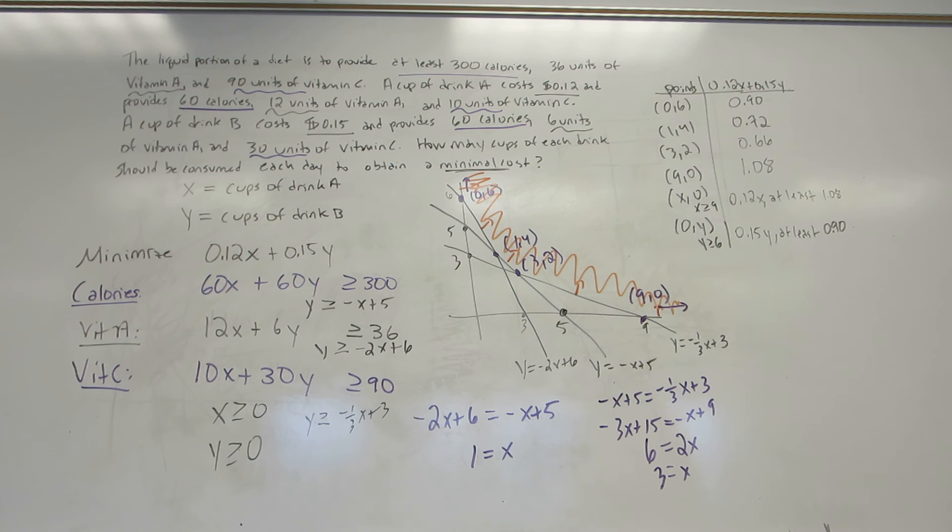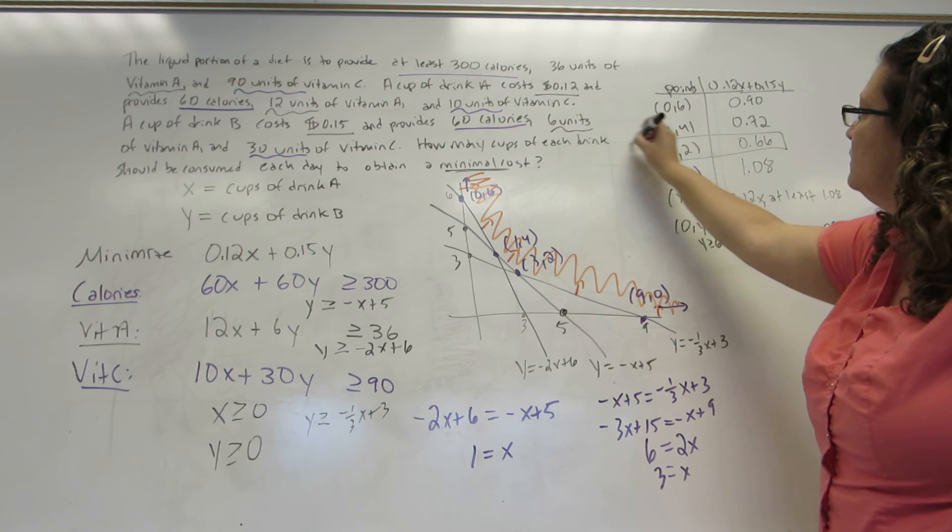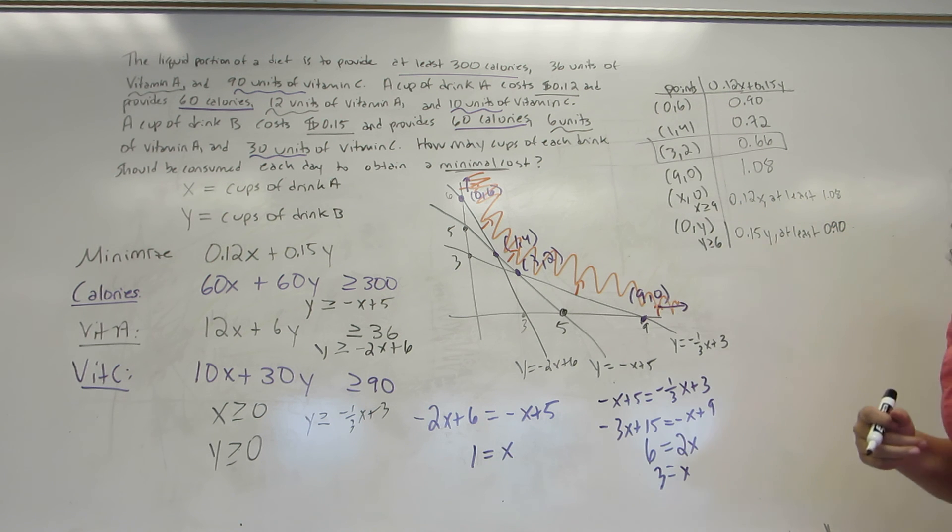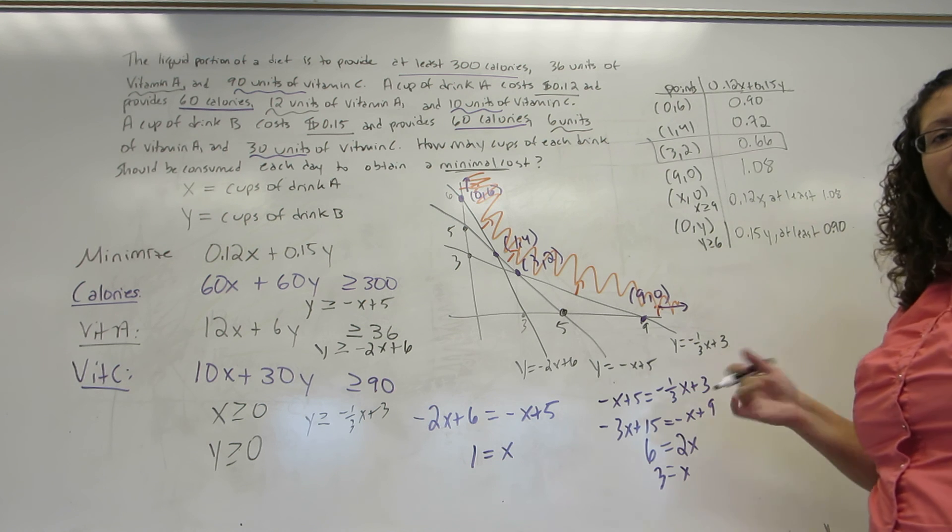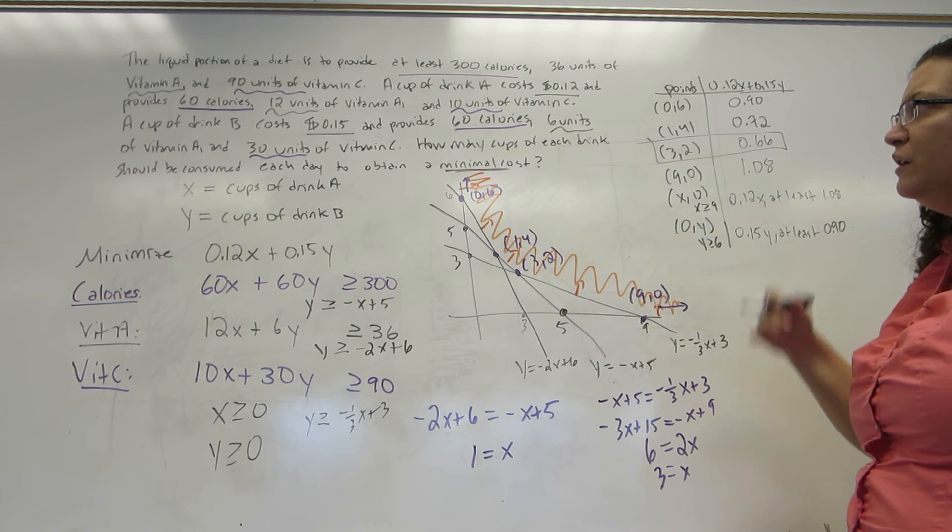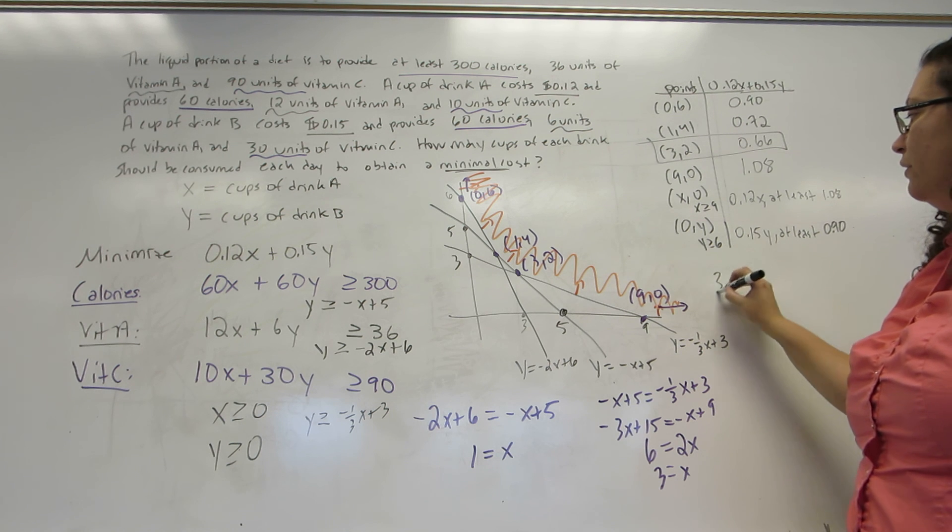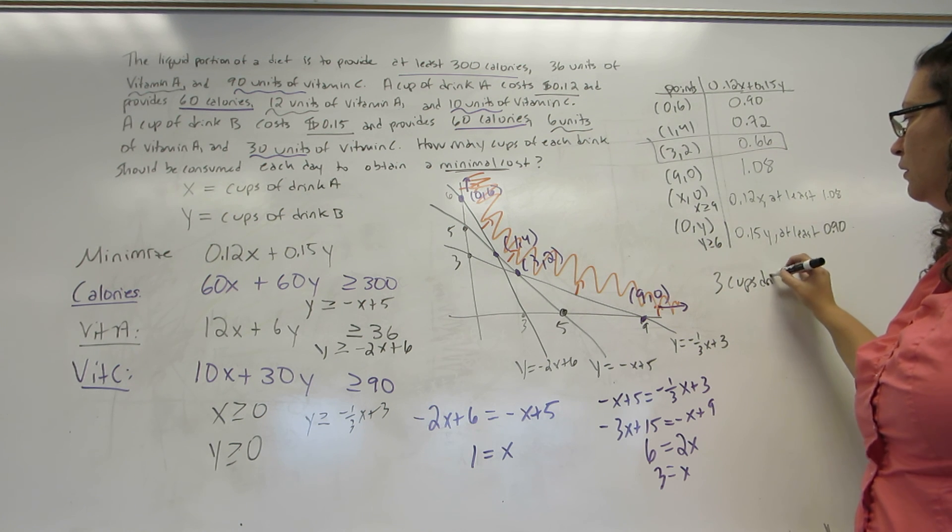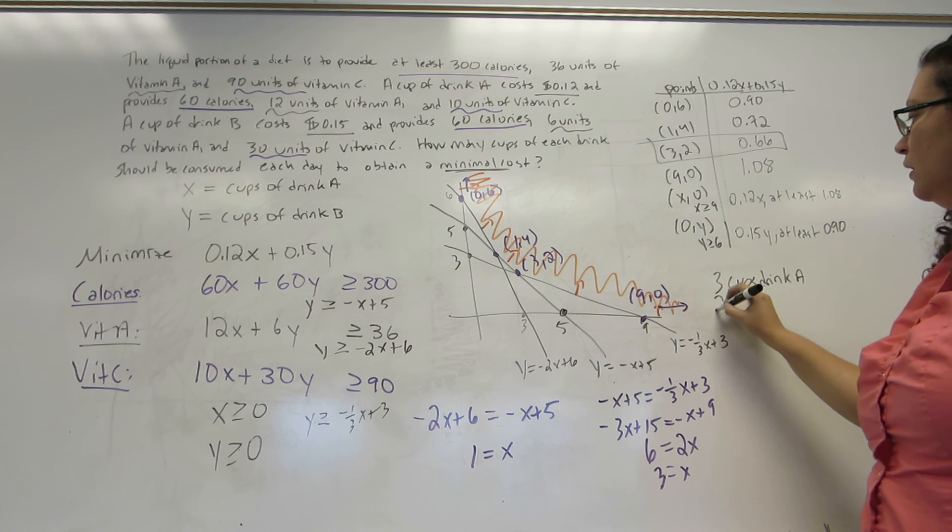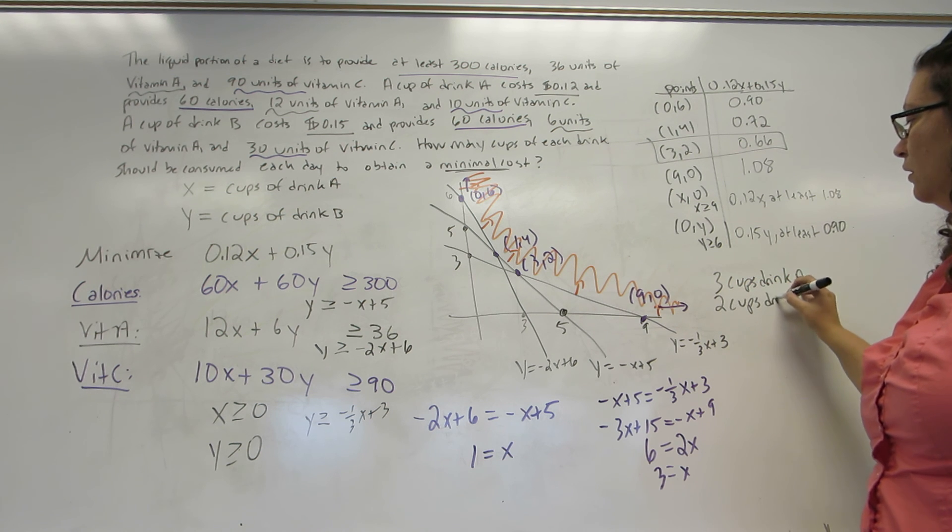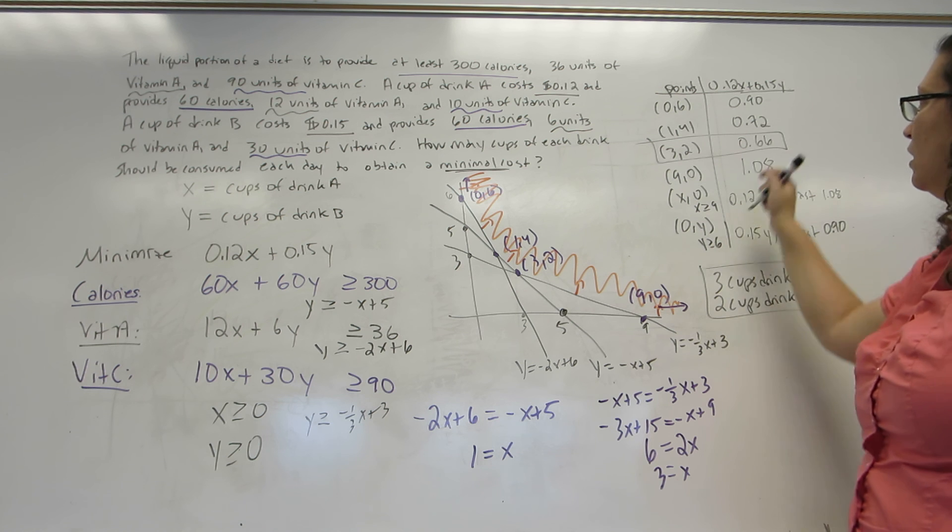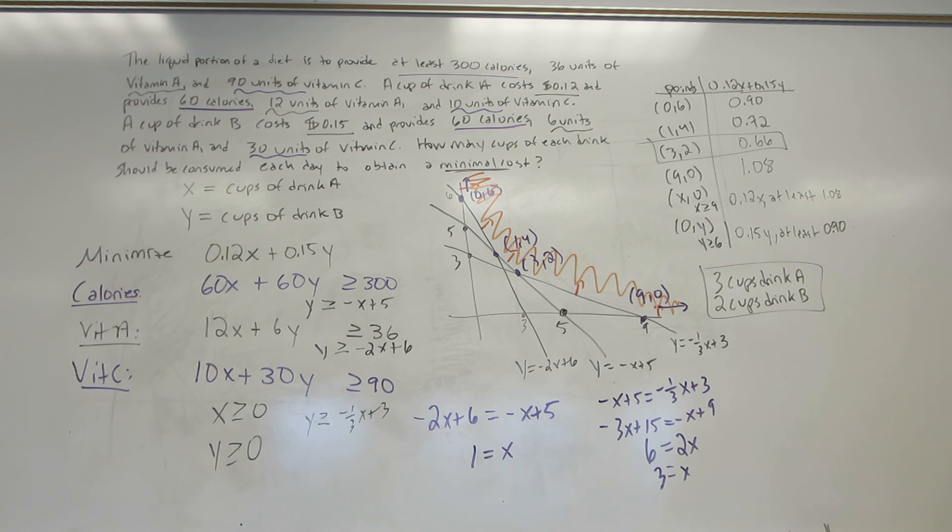Now we are trying for a minimum. So I go through and I say, do I have a defined minimum? The answer is yes. It's the 0.66. The only thing you have to be careful of, as with any word problem, is to actually answer the question that was given. And the question was, how many cups of each drink should be consumed? So the answer is 3 cups of drink A and 2 cups of drink B for a total cost of 66 cents a day.